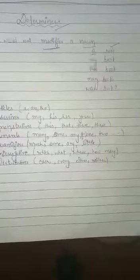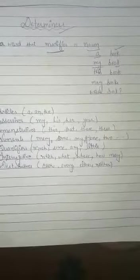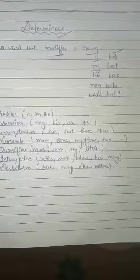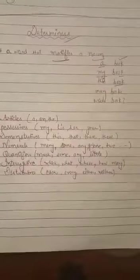If I write 'a book' it means I'm talking about one book. And if I write 'my book' it means I'm talking about whose book is this. I'm talking about the possession of the book, who possesses the book. My book, if I possess a book I'll say my book. And if I say 'this book' that means I'm showing which book is this.